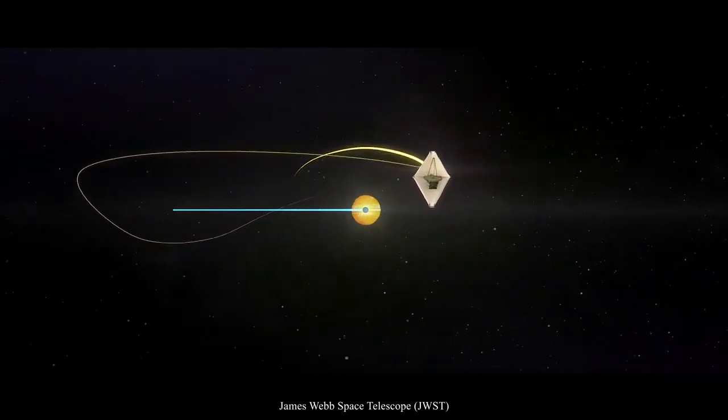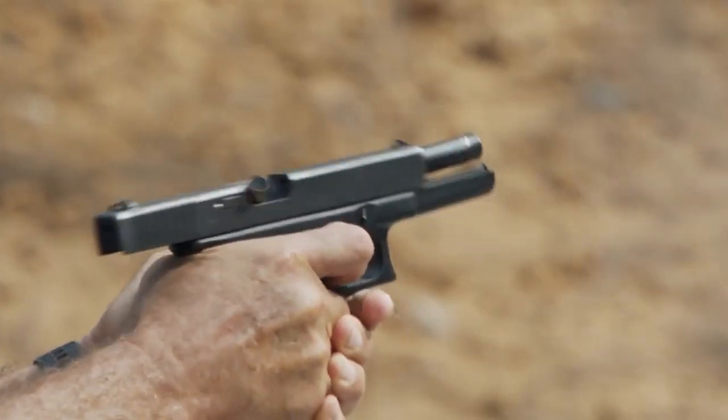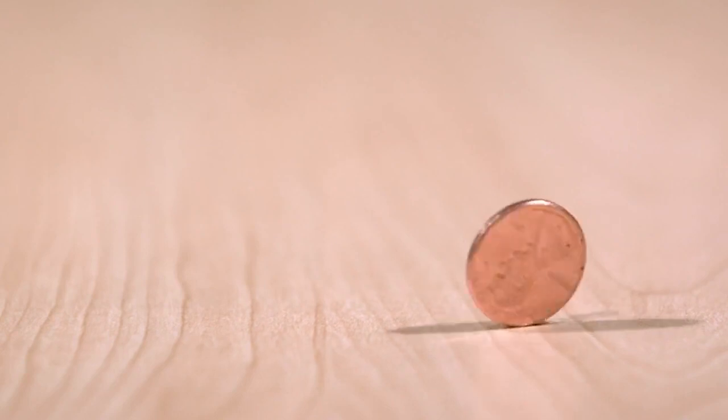The idea about the accuracy of Webb can be assessed from the example given by the telescope chief engineer, Charlie Atkinson, who claims that its pointing accuracy is equivalent to firing a bullet from Washington and hitting a coin on the top of a tower in Los Angeles.